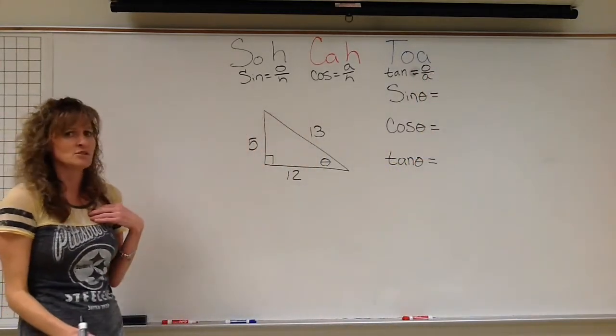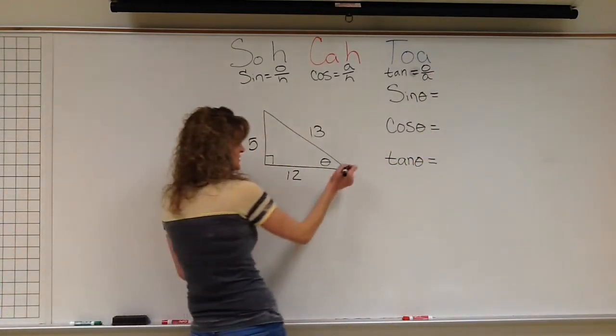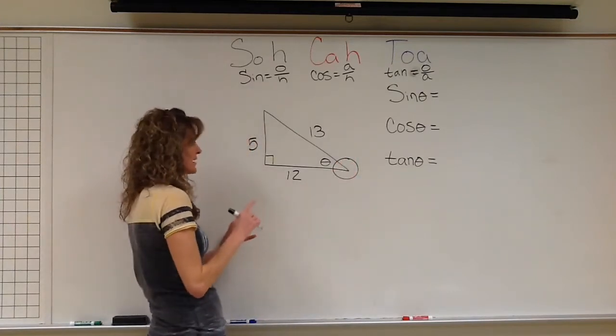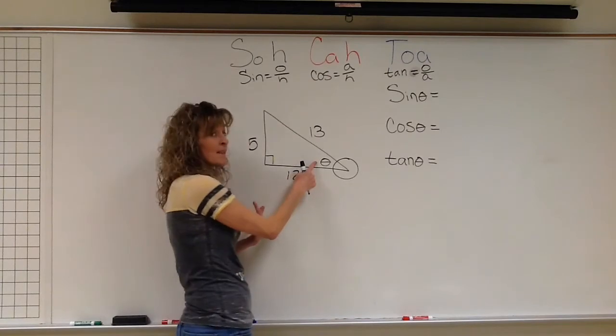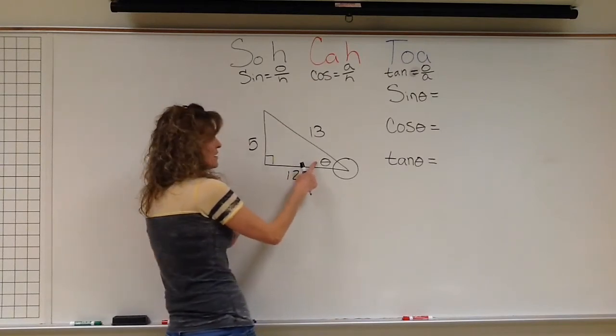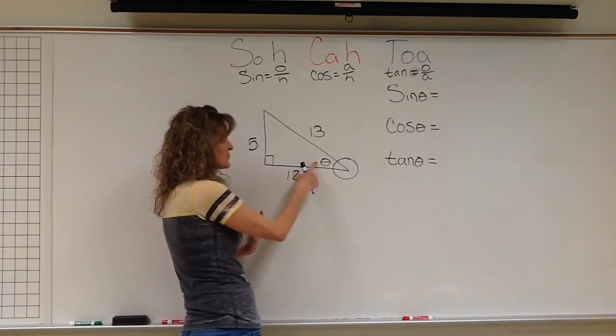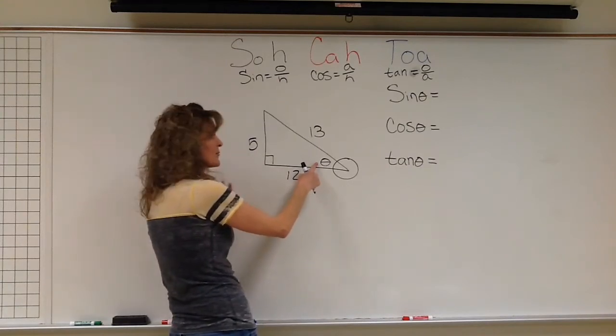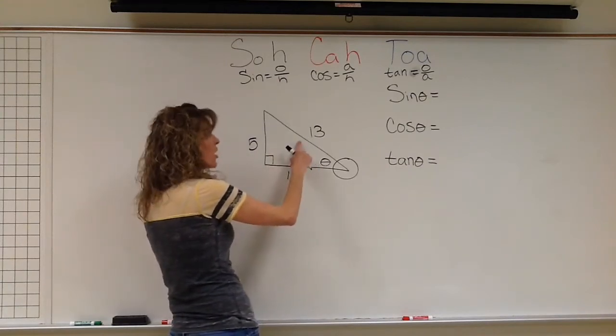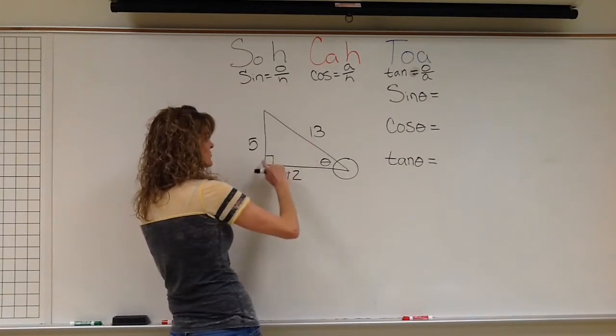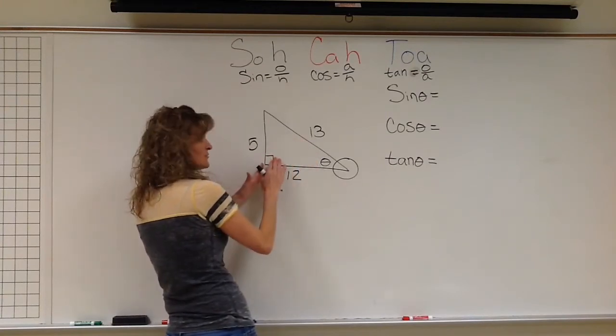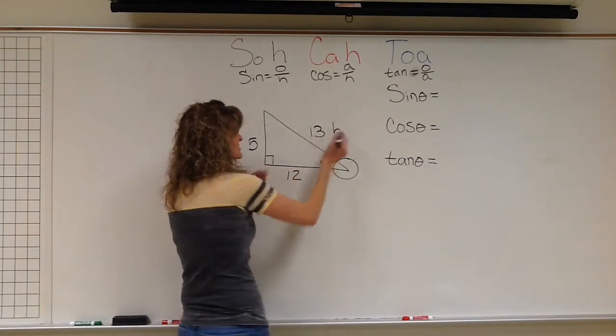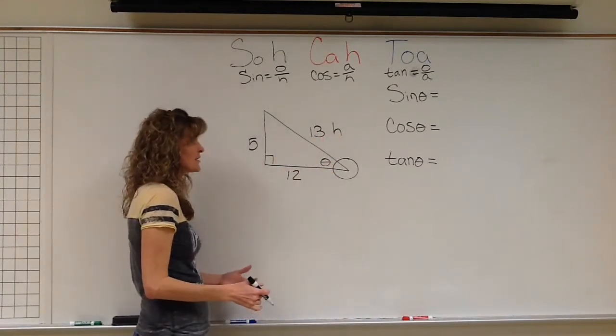All right, so the first thing you want to do is you want to identify your angle. So I'm going to circle that angle. It might have a question mark. It might have an X. In this case, it has the theta. It's just a variable, a symbol that represents a missing angle. And from that theta, I'm going to label my side. The hypotenuse is always, always, always across from the 90-degree angle. So identify your 90-degree angle. Across from that is the hypotenuse. It's also the longest side of the triangle.